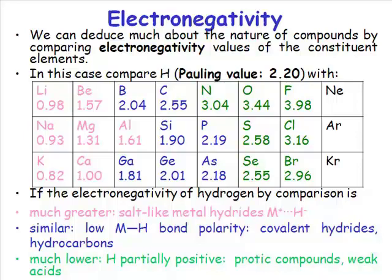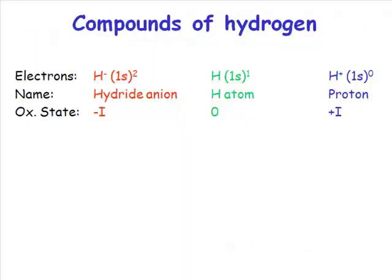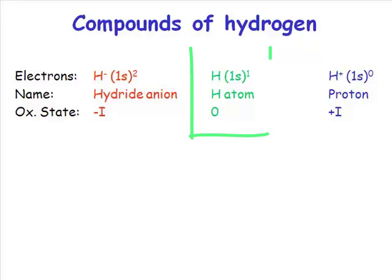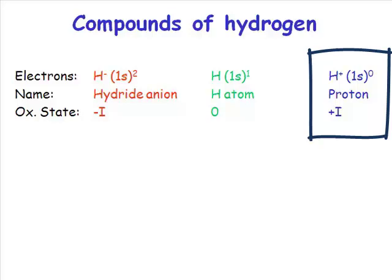We can predict what sort of compounds of hydrogen we're going to get simply by where its partner atom is in the periodic table. You can have hydrogen with a 1s2 hydride electron configuration in a formal oxidation state of minus one. You can have a hydrogen atom with a 1s1 configuration, oxidation state of zero. We can pull that electron off and produce protons with an oxidation state of plus one.